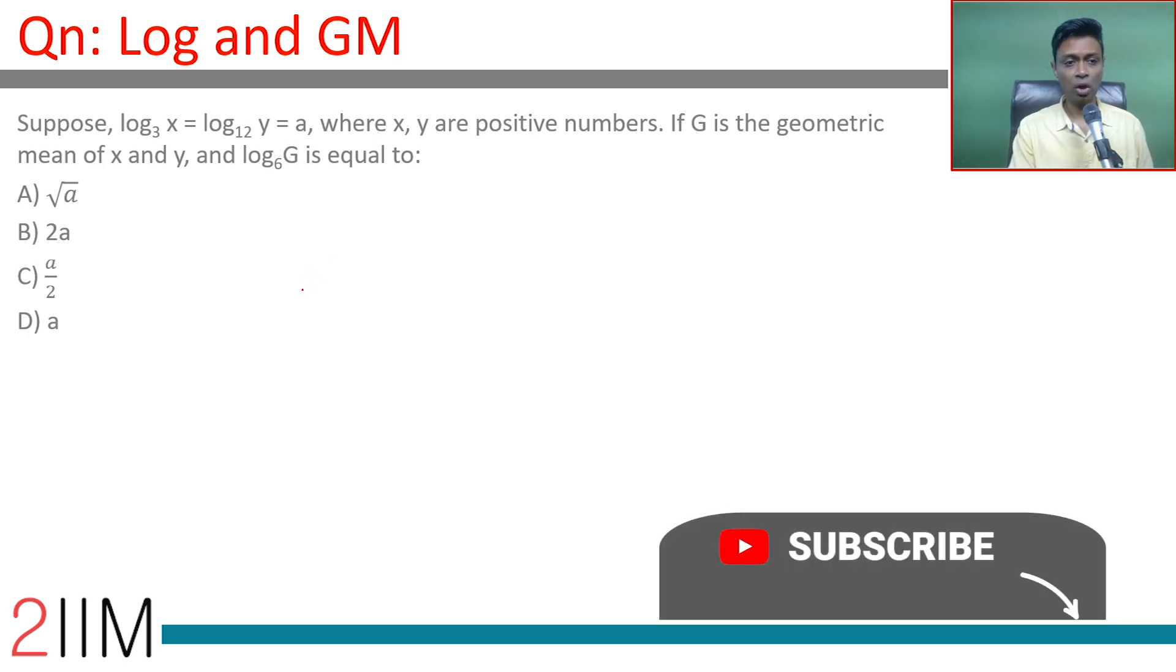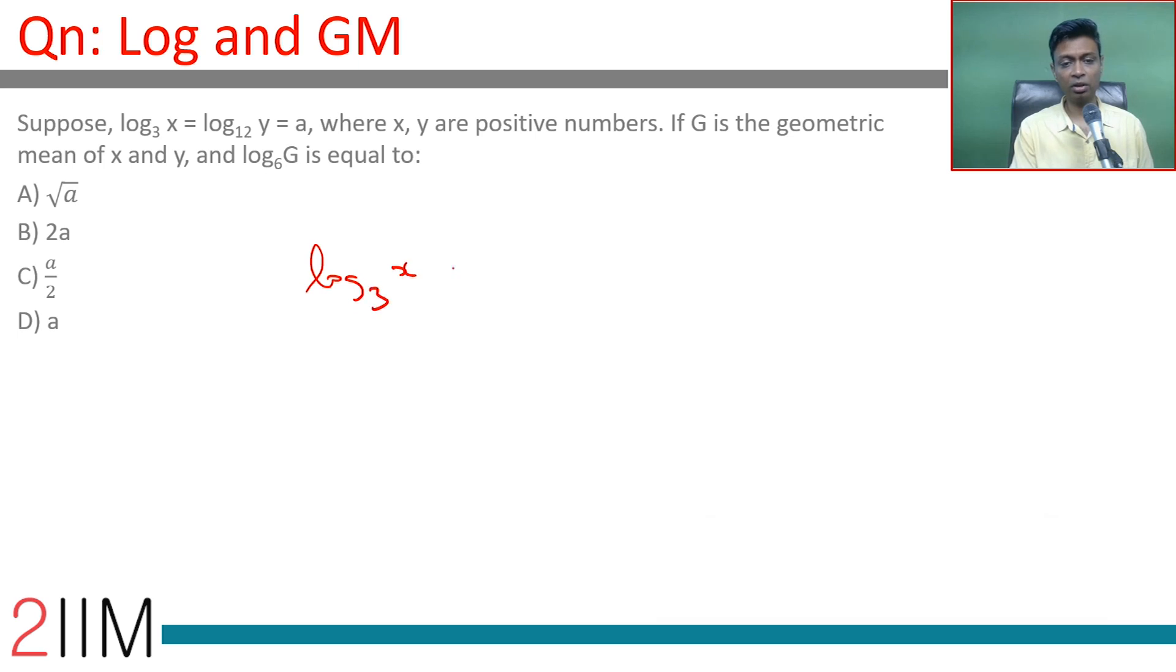Log x to the base 3 would be a, or x is 3 power a. Log y to the base 12 is a, or y is 12 power a. Geometric mean is square root of xy, which is square root of 3 power a into 12 power a, square root of 36 power a.